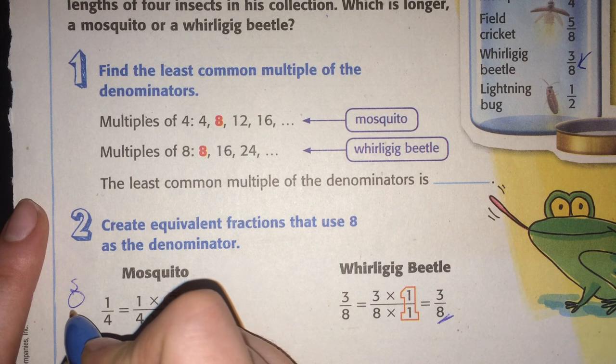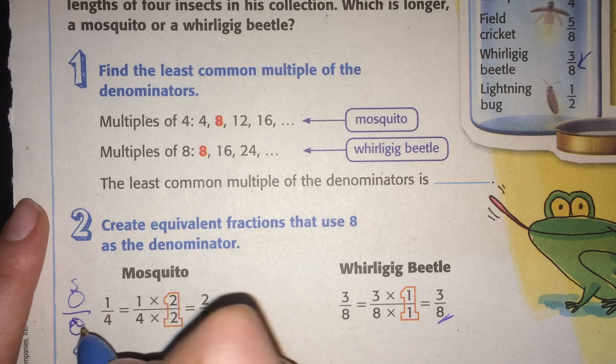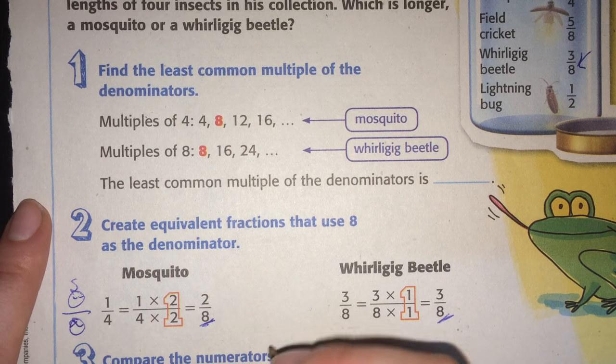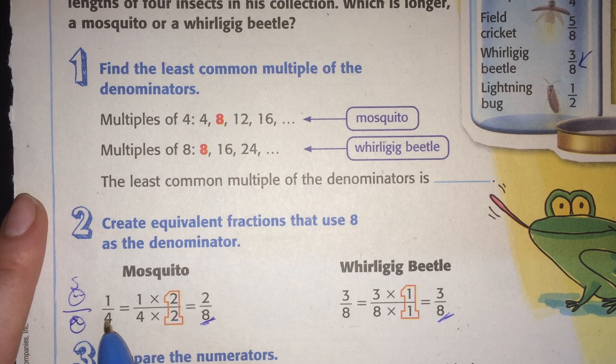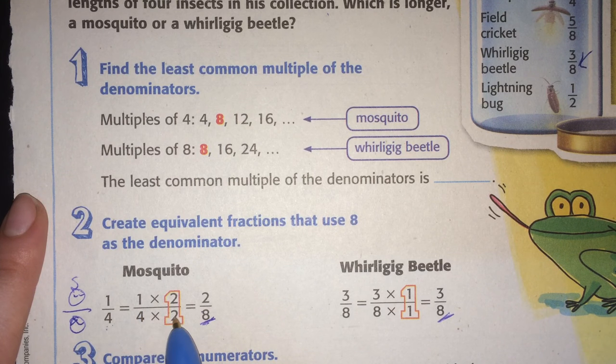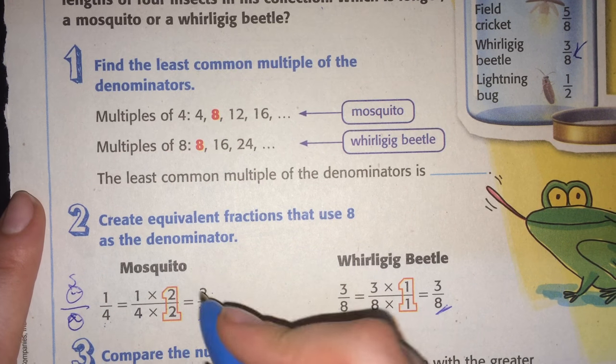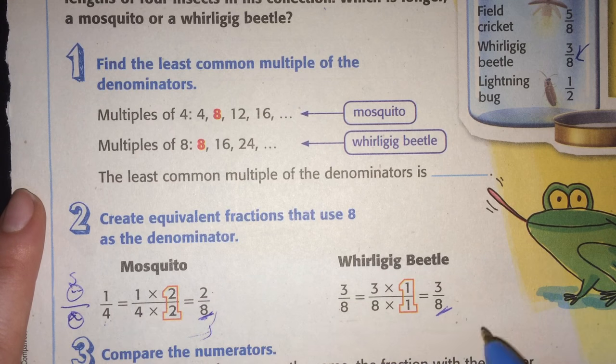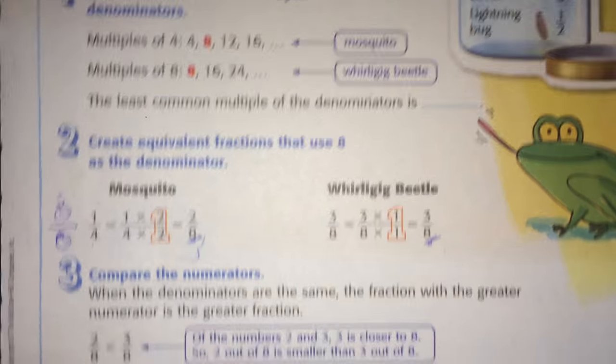But remember, what you do to the one, you have to do to the older brother, right? You've got to do the same. Remember from the lesson before. You have to be fair to the brothers. So I can multiply. Since I want the denominator to be eight, I can multiply by two. Four times two is eight. And one times two is two. So this fraction now is two-eighths. These are equivalent. And the whirligig beetle already had a denominator of eight. So we're good.